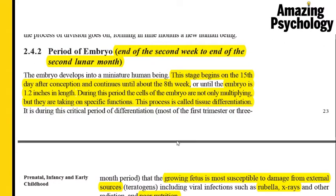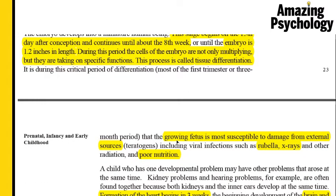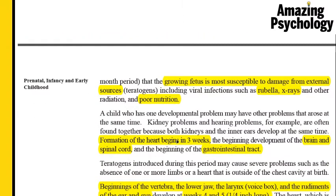The period of the embryo starts at the end of the second week and goes on till the end of the second lunar month, approximately eight weeks — starting on day 15 and ending at week 8. By the end of this stage the embryo will be about 1.2 inches in length. During this time lots of cells multiply within the embryo and start taking on different functions — a process called tissue differentiation. This is the stage when the embryo is extremely susceptible to external damage from teratogens, which are factors that can cause mutations or birth defects, such as rubella, X-rays, radiation, or poor nutrition.